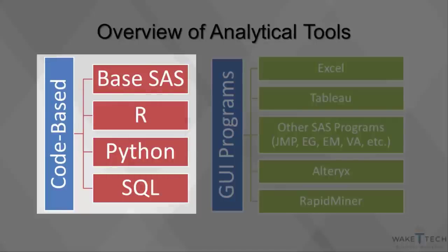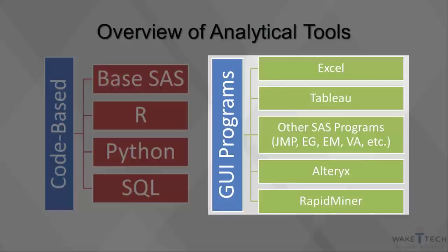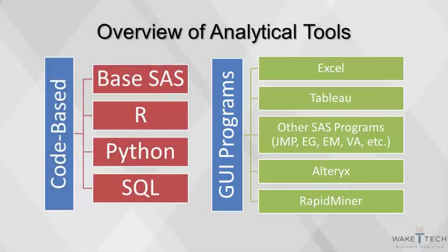The main benefit of writing code is that it allows for more flexibility — there are more features and it allows for more possibilities. The drawback of coding is the extended learning curve. Within the last decade, there have been many new GUI programs that make analytics easier to implement without the need for writing code. Programs such as Tableau, Alteryx, and RapidMiner have started gaining market share, along with older tools such as SAS Enterprise Guide. But none of these tools have yet to replace the overwhelming popularity of code-based software, such as SAS, R, Python, or SQL.